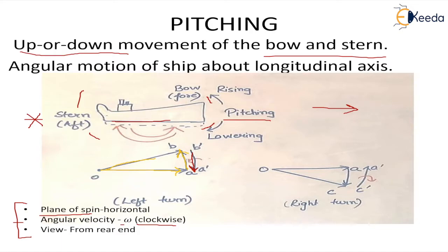When we apply the right hand screw rule on the basis of this arrow, we see that the movement is in the counter-clockwise direction. When this counter-clockwise couple is applied on the ship, it raises the bow or the fore and lowers the stern.